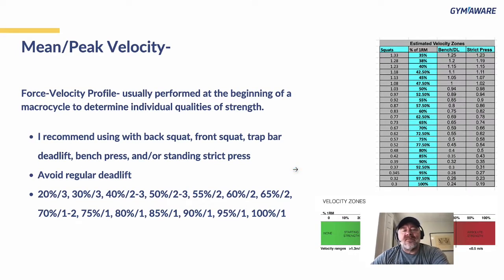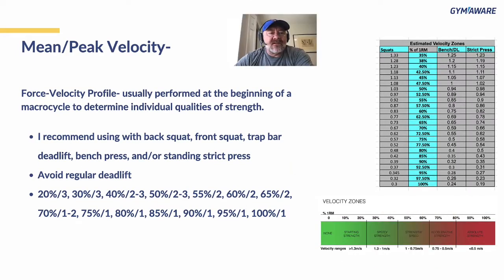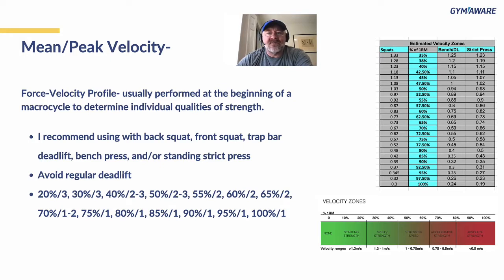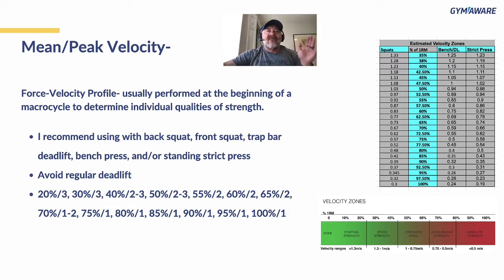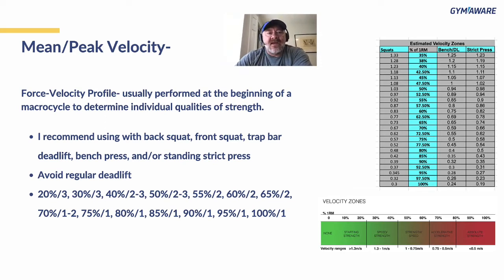The force-velocity profile — we usually do that at the beginning of a macrocycle or at the beginning of the year to determine the qualities and strength of each individual. I get it — a lot of you coach a thousand people and can't individualize things, but you could measure everybody on your team at the beginning of the season and divide them between fast and weak, powerful, strong and slow, and individualize it in that way at least. That would put you way ahead of most people.